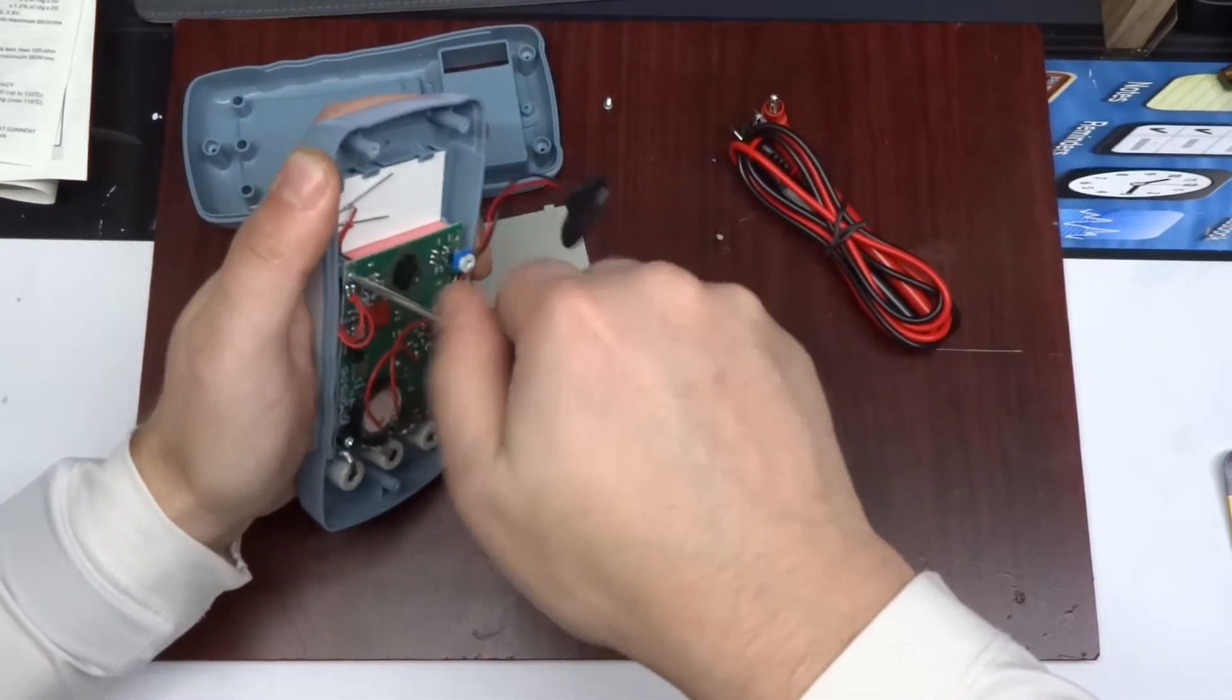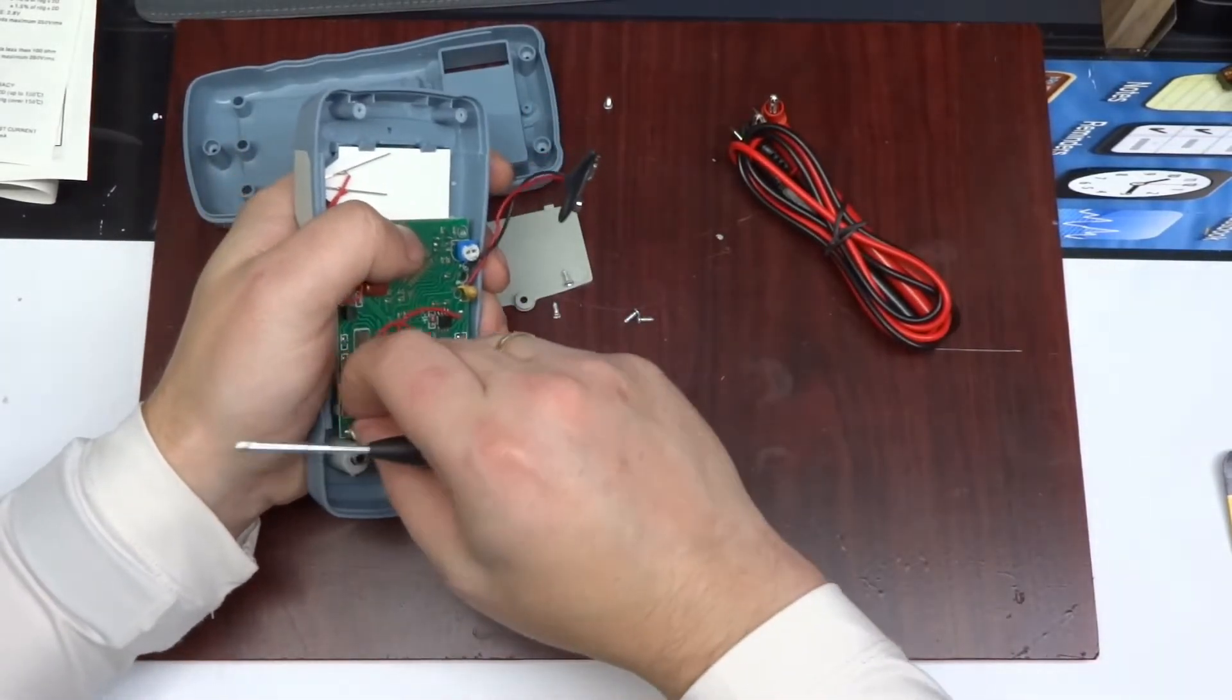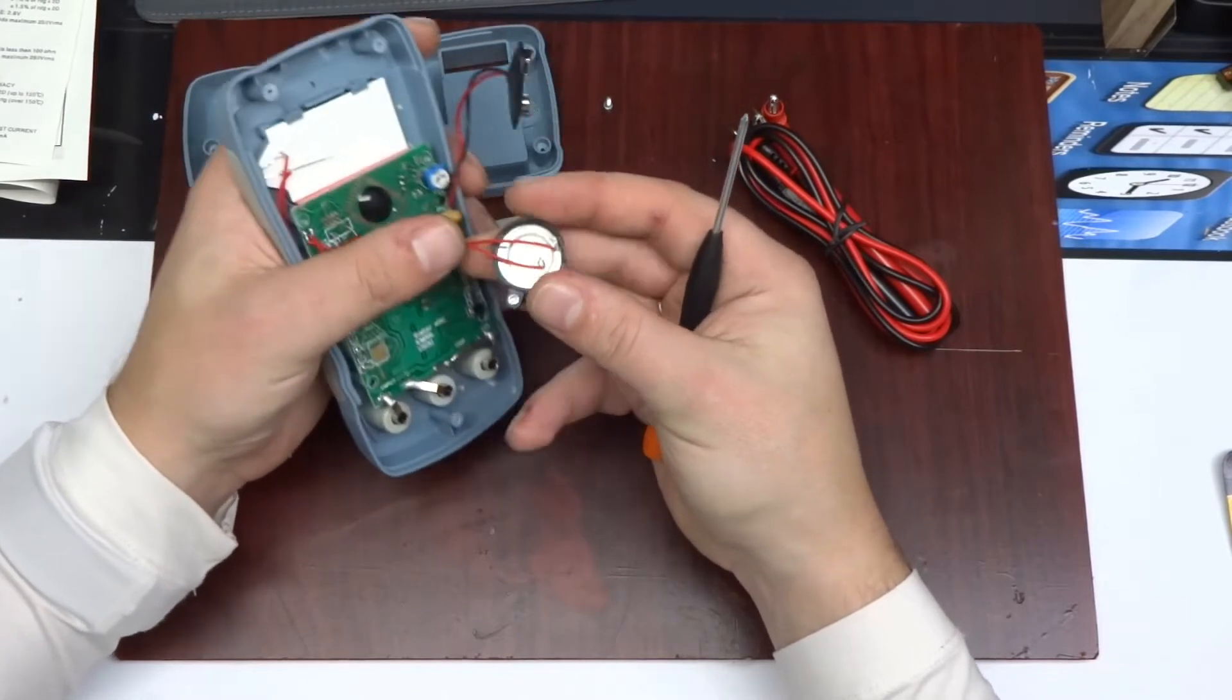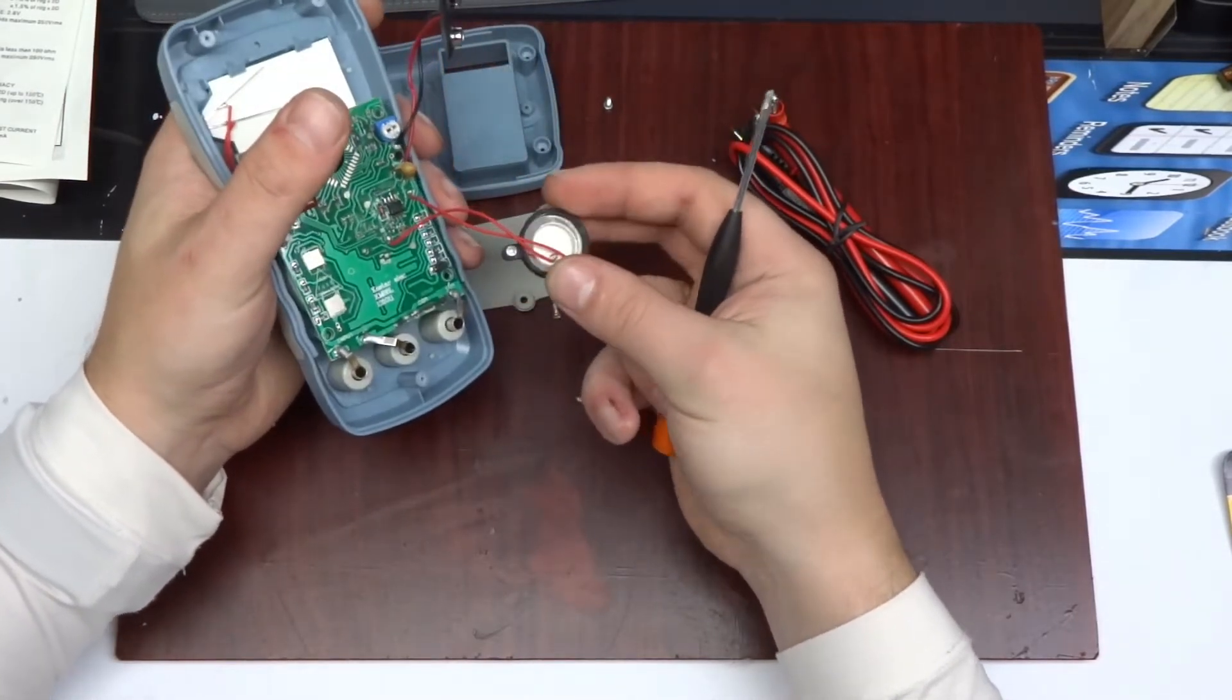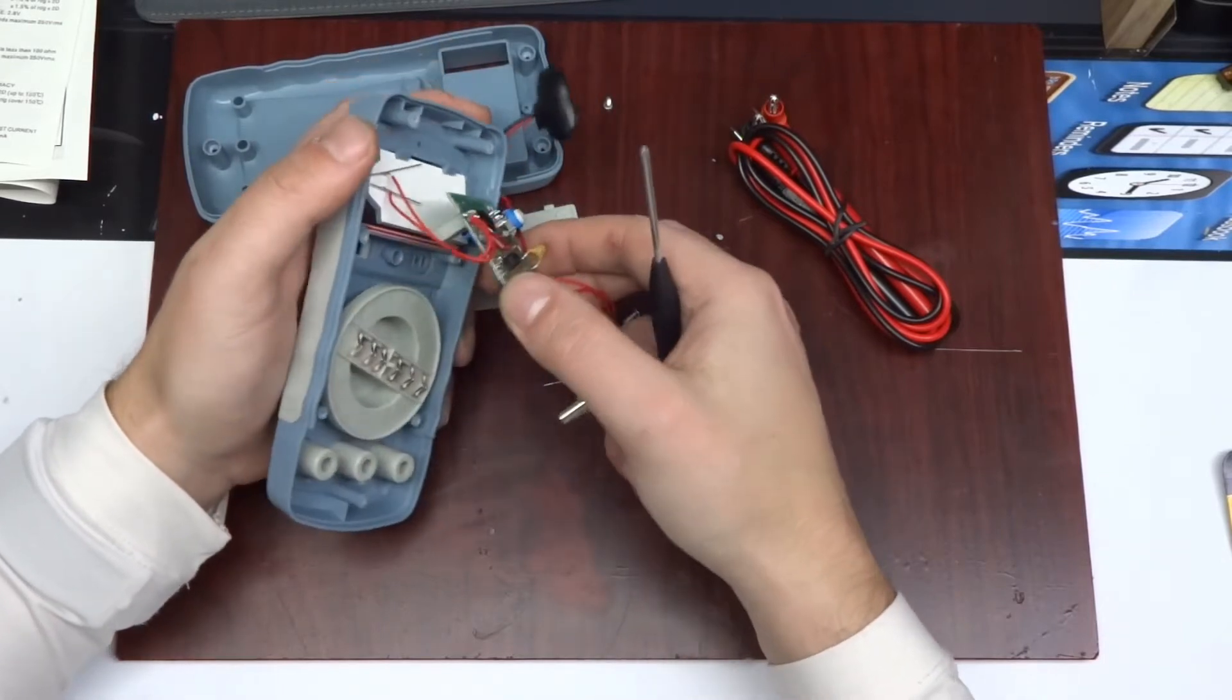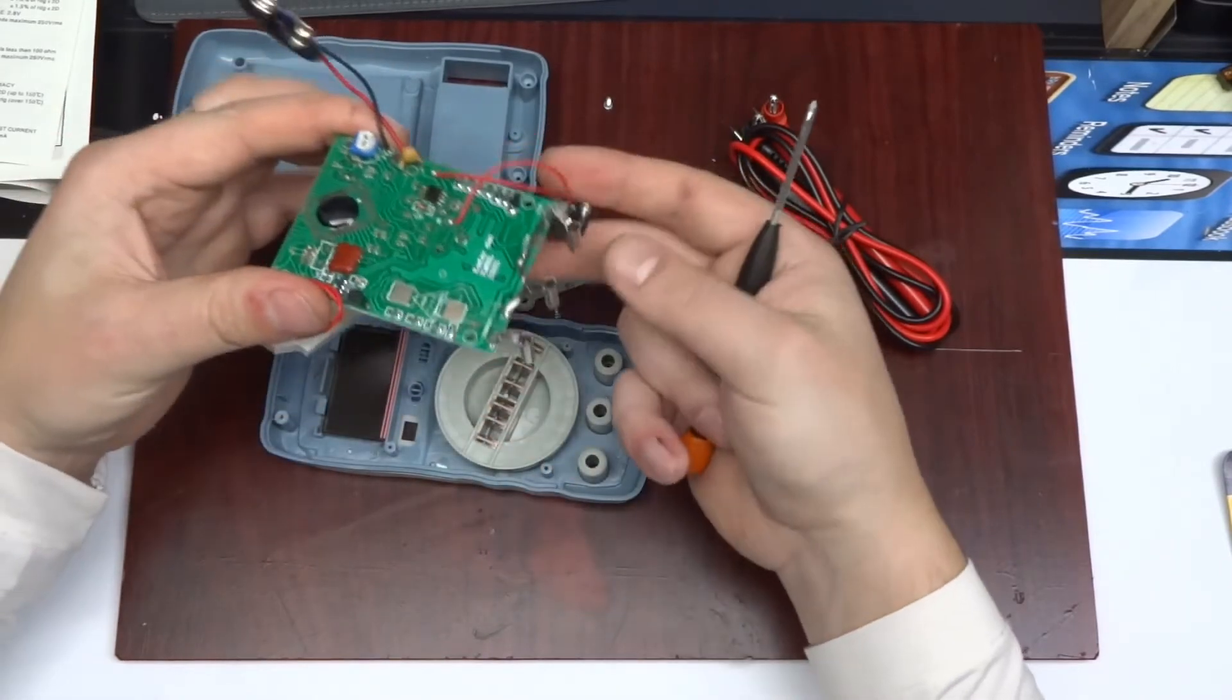The board is held with some more self-tapping screws. Clever design, so one of the screws holding the board has got a dual purpose. It also holds the buzzer in place which is in its own plastic enclosure, which is nice. They actually put a nice plastic casing for the buzzer.